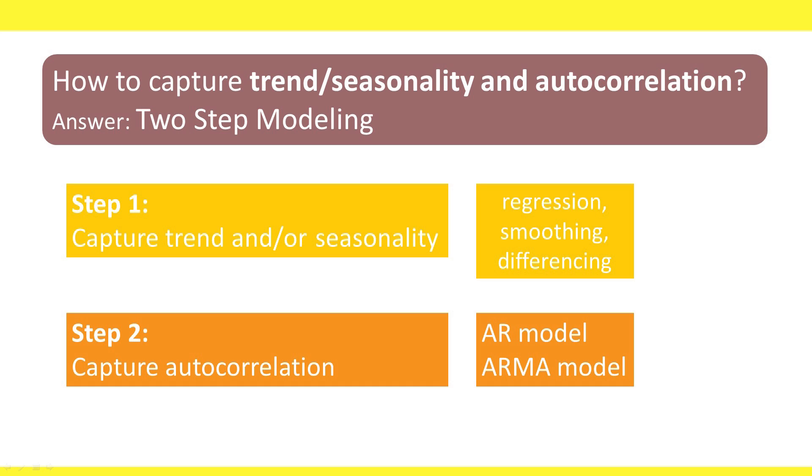In the second step, we apply an AR model to the de-trended and de-seasonalized series in order to capture autocorrelation. We will see in this video how to do this with an AR model. In the next video, we'll see how to use the more elaborate ARMA model, autoregressive moving average model.